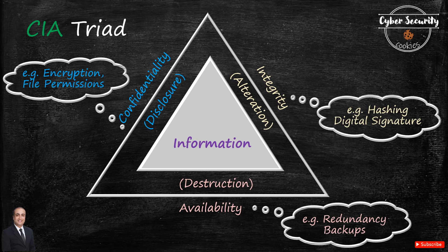To achieve the three aspects of the CIA triad: confidentiality is achieved via encryption or file permissions. Encryption means when you are sending data across the internet, the data is encrypted so it is only readable between the intended users. File permissions mean access is only provided to certain users. I'll be sharing more on public key infrastructure in my next videos.